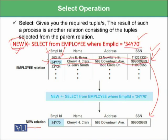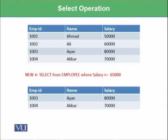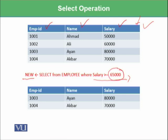We can also use the select operation to select multiple tuples. For example, using the same table with fields employee ID, employee name, and salary, we create a new relation that selects from employee where salary is greater than or equal to 65,000. The first row with 50,000 is not greater than or equal to 65,000, so it will not be shown. Similarly, 60,000 is not greater than or equal to 65,000, so that row will not be shown either.